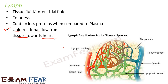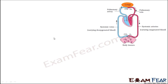Let us understand the lymphatic system. From our previous lesson, we saw how oxygenated and deoxygenated blood flows in our body. From the heart, oxygenated blood reaches the different body tissues. From the body tissues, deoxygenated blood goes back to the heart, which then pumps it to the lungs where it gets converted into oxygenated blood, because the lungs are where oxygen is taken in from the atmosphere. The oxygenated blood is then sent back to the heart. This is how the circulatory system works.